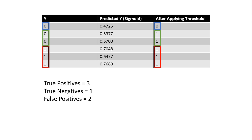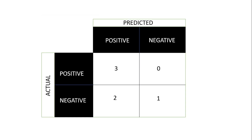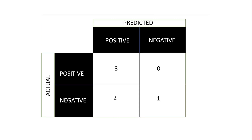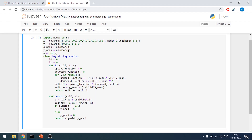False positives are where y is actually negative but y_pred says it is positive — so the prediction is false and is saying positive. False negatives are where y is one but the algorithm says zero. If we put these values — three, one, two, and zero — we get the confusion matrix by replacing them where they are needed.